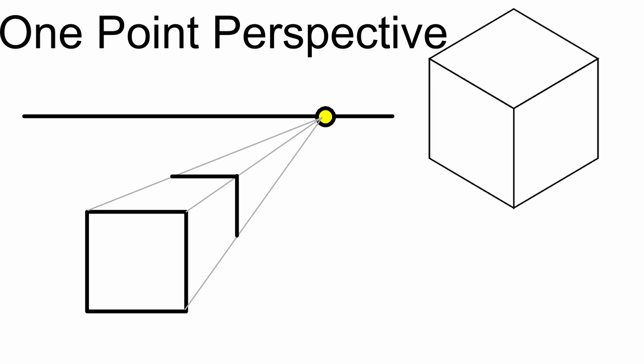Now all I need to do is go back in and connect my lines — one, two, and three. This is why it's important to draw those lines going to the vanishing point, because without them you wouldn't be able to connect those points. But that's a one-point perspective. It's a little skewed — it's not a perfect cube and it's never going to look perfect. With these drawings you always have a little wiggle room, which is nice because it's hard to get something wrong.